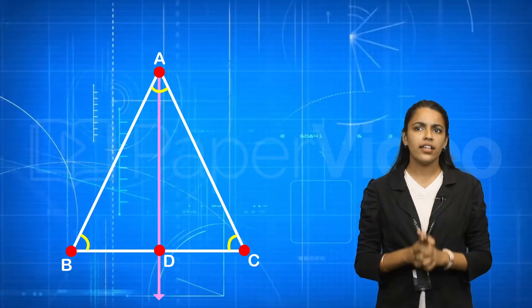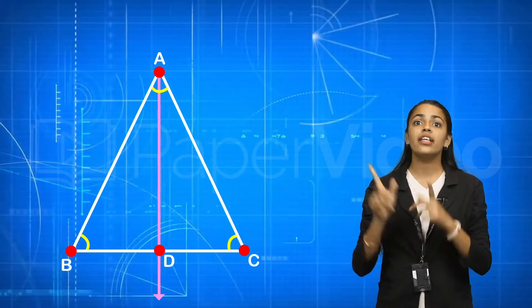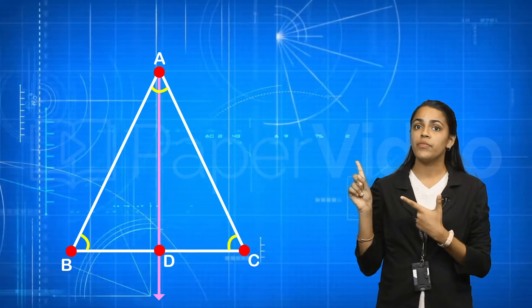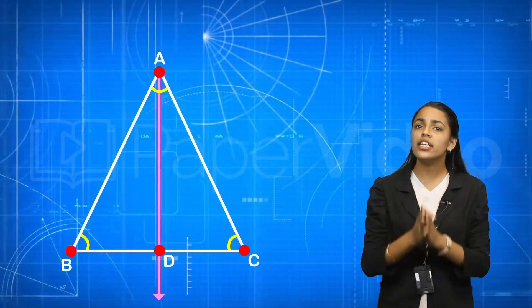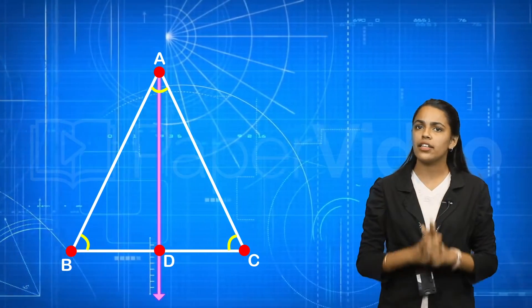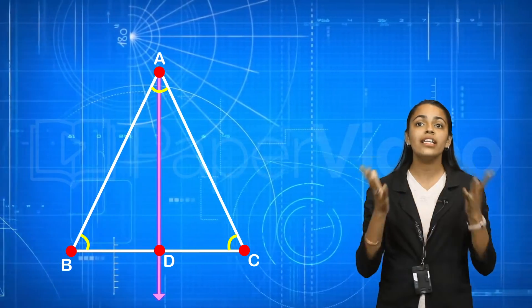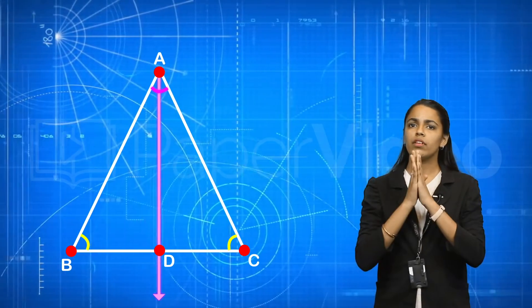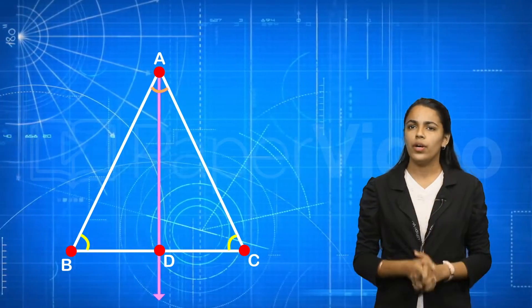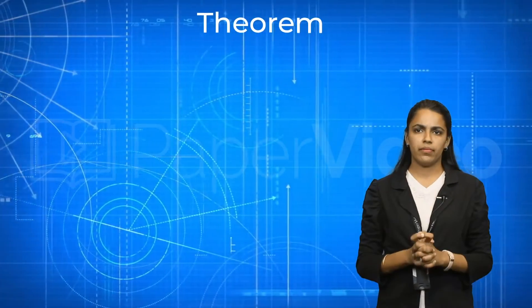For instance, in triangle ABC, ray AD is the internal bisector of angle A. Now let's come to the theorem.